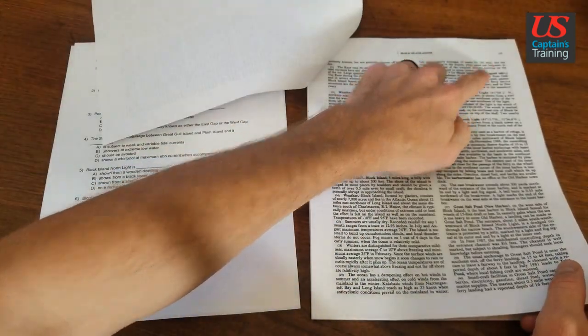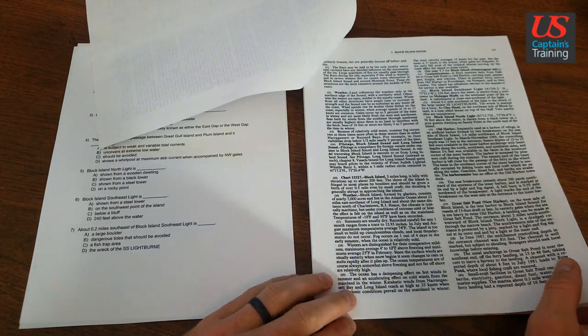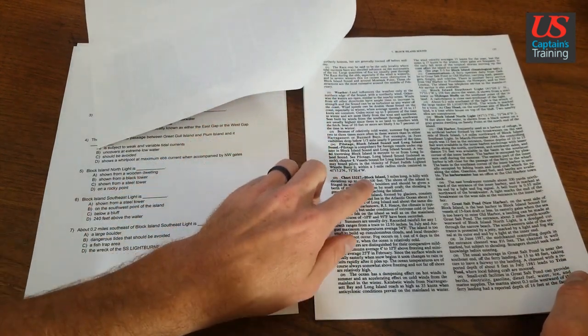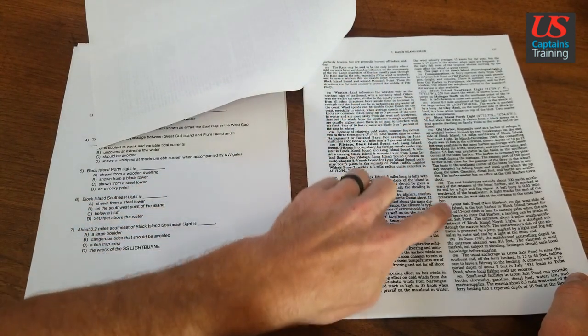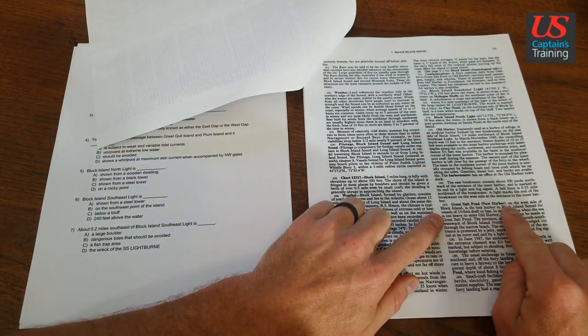Here you go, page 137, right at the beginning. We're looking up Great Salt Pond, so we've got weather, Black Island, Black Island North. Here we are, Great Salt Pond.